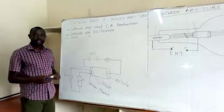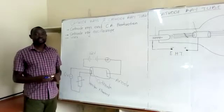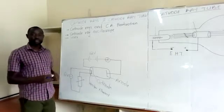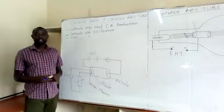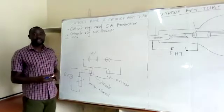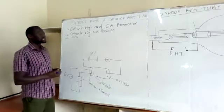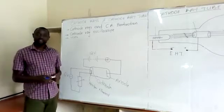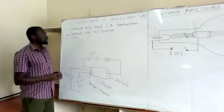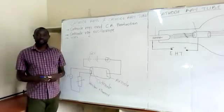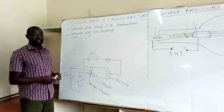Hello everyone. Welcome to this session. I'm Mr. Zak. I'll be taking you through a topic in book four in physics — that is Cathode Rays and the Cathode Ray Tube. In this topic, we'll be looking at Cathode Rays and Cathode Ray production. We'll also look at the Cathode Ray Oscilloscope and also the uses of the Cathode Ray Oscilloscope.